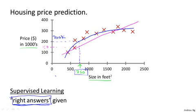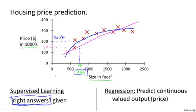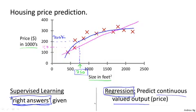To define a bit more terminology, this is also called a regression problem. By regression problem I mean we're trying to predict a continuous value output, namely the price. Technically prices can be rounded off to the nearest cent, but usually we think of the price of a house as a real number or scalar value — a continuous value number. The term regression refers to the fact that we're trying to predict this sort of continuous values attribute.